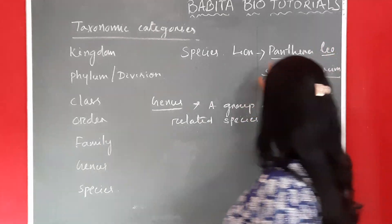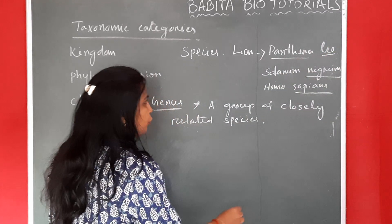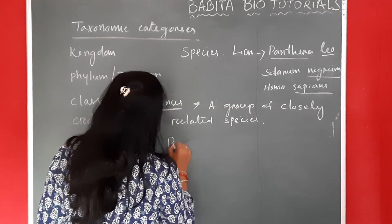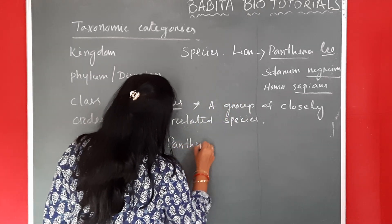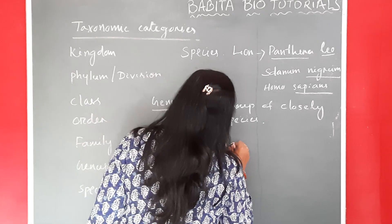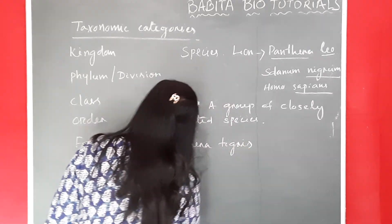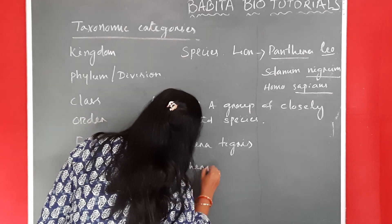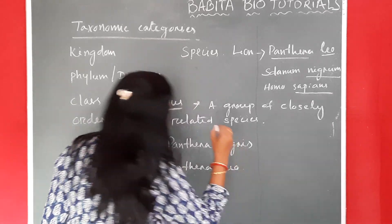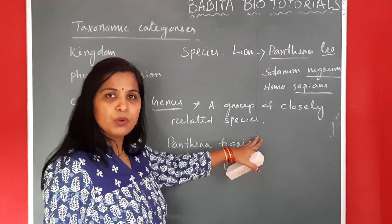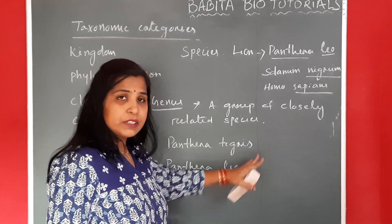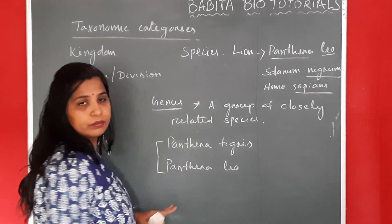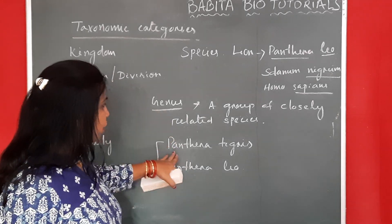Panthera leo is the name of the lion. Same way, your tiger's name is Panthera tigris. So tigris and leo are more closely related species which belong to one genus — that is your Panthera.